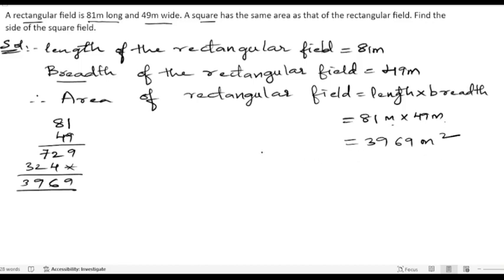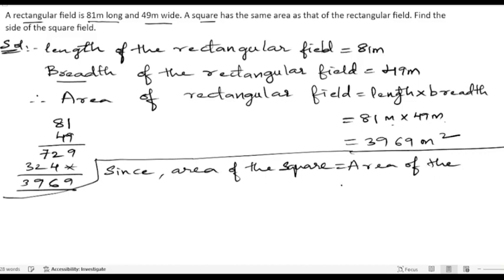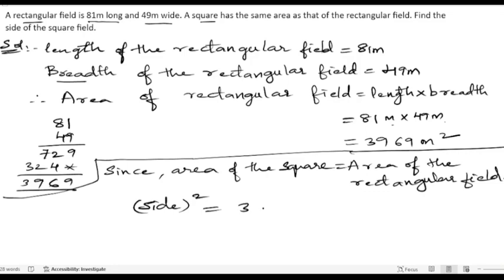This is the area of the rectangular field. Since area of the square equals the area of the rectangle, we know that side squared equals 3969 meter square. When we remove the square we get: side equals the square root of 3969.